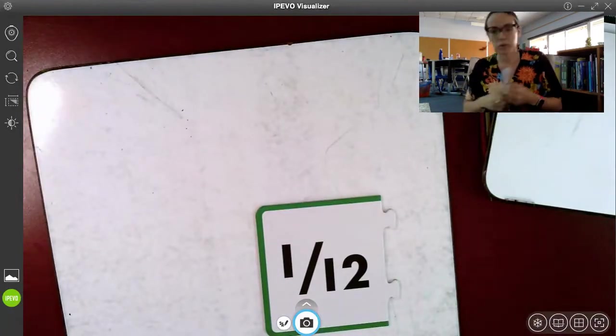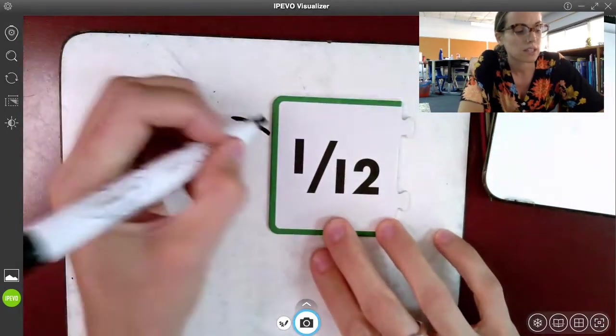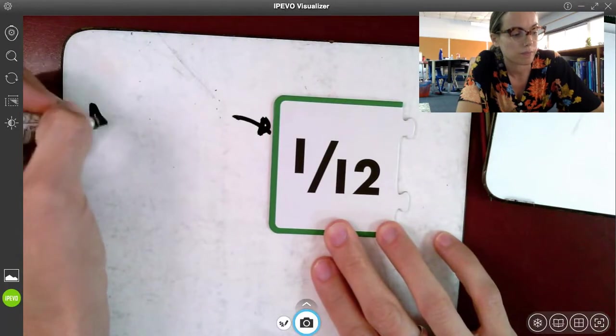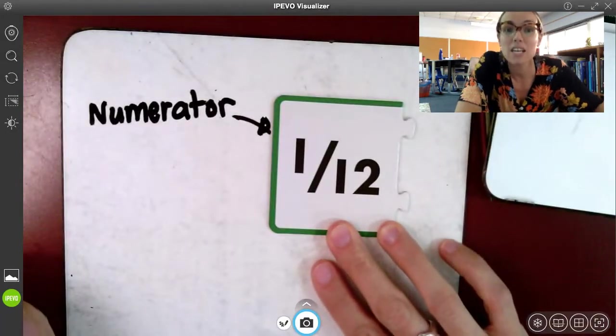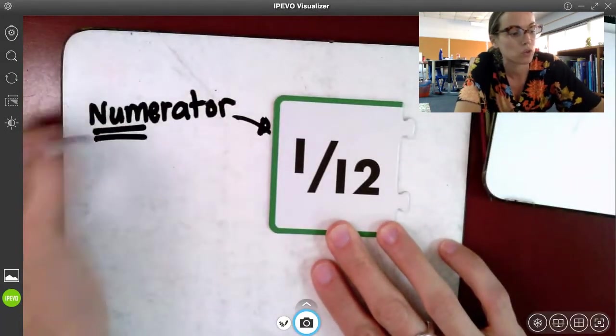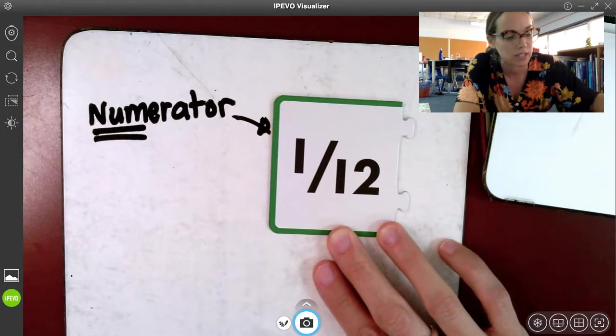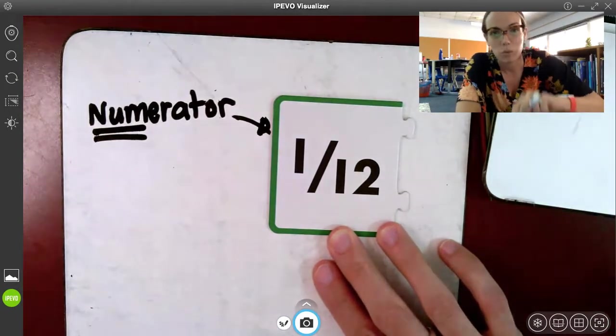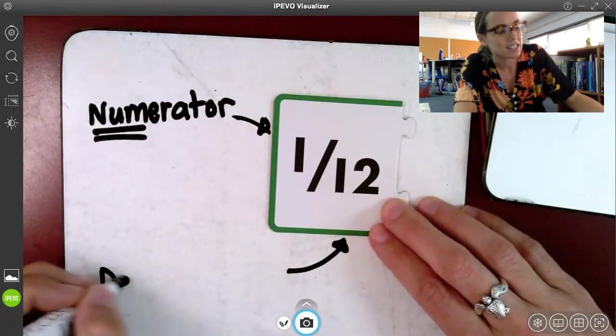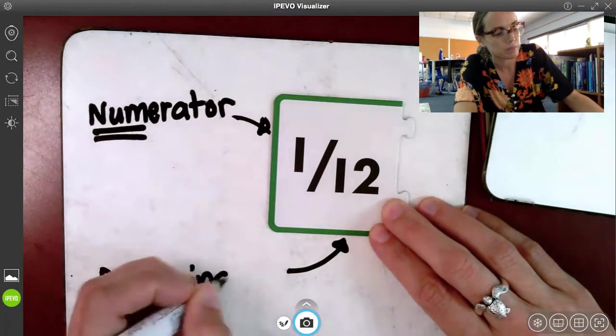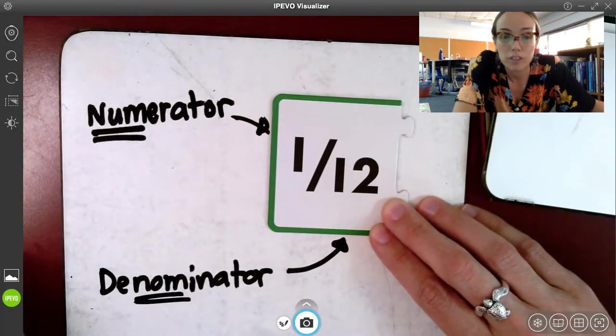Now, I want to review terms for just a second. We'll use this fraction here, one-twelfth. Just to review, that this top number is called the numerator. That's the number of pieces. Remember, our root, num, or nom, means number. So the numerator is the top. That's our number of pieces. The number that is shaded in. And then the bottom, of course, is the denominator.